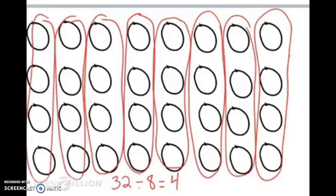So in this example I see that I have eight groups and in each group there are one, two, three, four pancakes. So my whole amount of 32 pancakes divided by eight people that are coming to the party.